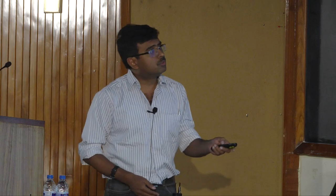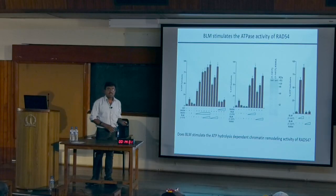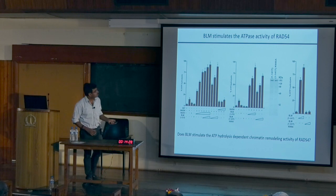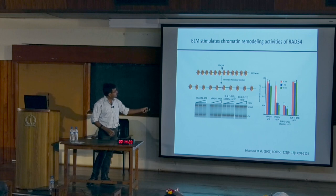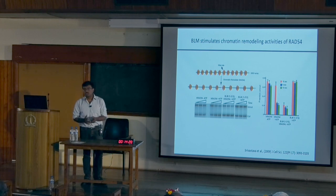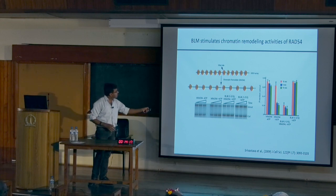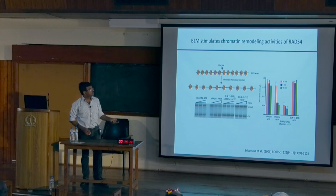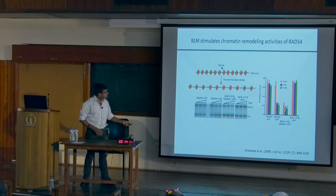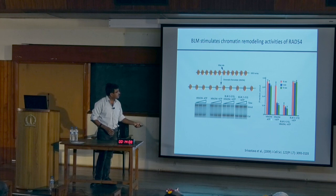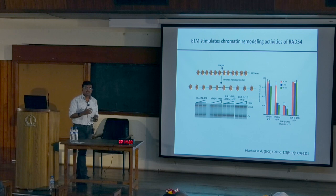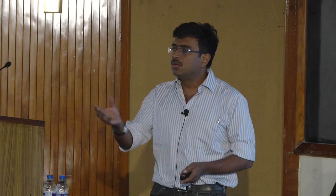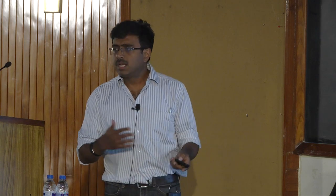We also performed a remodeling assay where a restriction site is normally hidden in the closed chromatin conformation; when remodeling occurs, the site is opened and cut. We found that full-length BLM indeed helps the remodeling process, and specifically it is a very small region — the extreme N-terminus — that drives this. Subsequently we identified a 32 amino acid peptide, and I will come back to what we are doing with that peptide at the end.